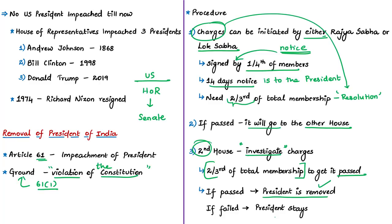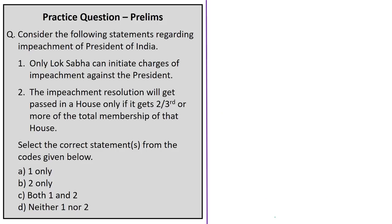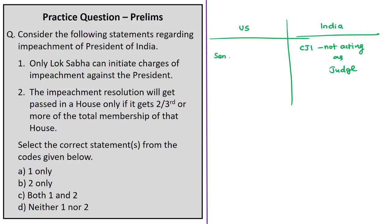Note that neither in the first House nor in the second House is the Chief Justice of India mandated by the Constitution to appear. This means the Chief Justice of India is not present in the process of impeachment of the Indian president. In the United States, the Chief Justice of the Supreme Court presides over the Senate trial — acting as judge — while House managers act as prosecution and the Senate acts as jury, with the impeached official as the defendant.